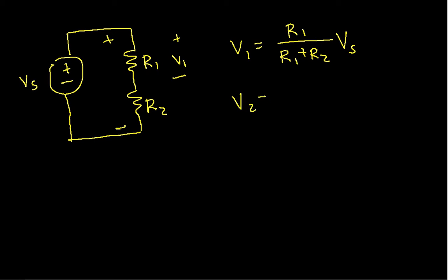V2, similarly, is R2 over R1 plus R2 V sub s. So this is the voltage divider. It's a very simple result, but again, it shows up all the time, it's extremely useful.